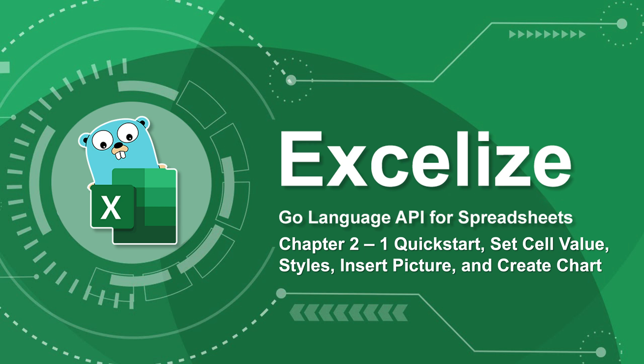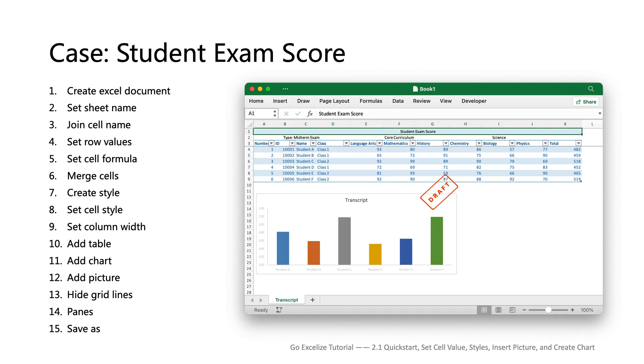Hello everyone, this is the second chapter of the Excelize tutorials section 1. I will show you how to use the typical features of Excelize step-by-step in this chapter, including how to read and write Excel documents. In this section you can learn how to set cell values, set styles for Excel, add a table, and add a native graphic chart. I will use 15 Excelize functions in this section.